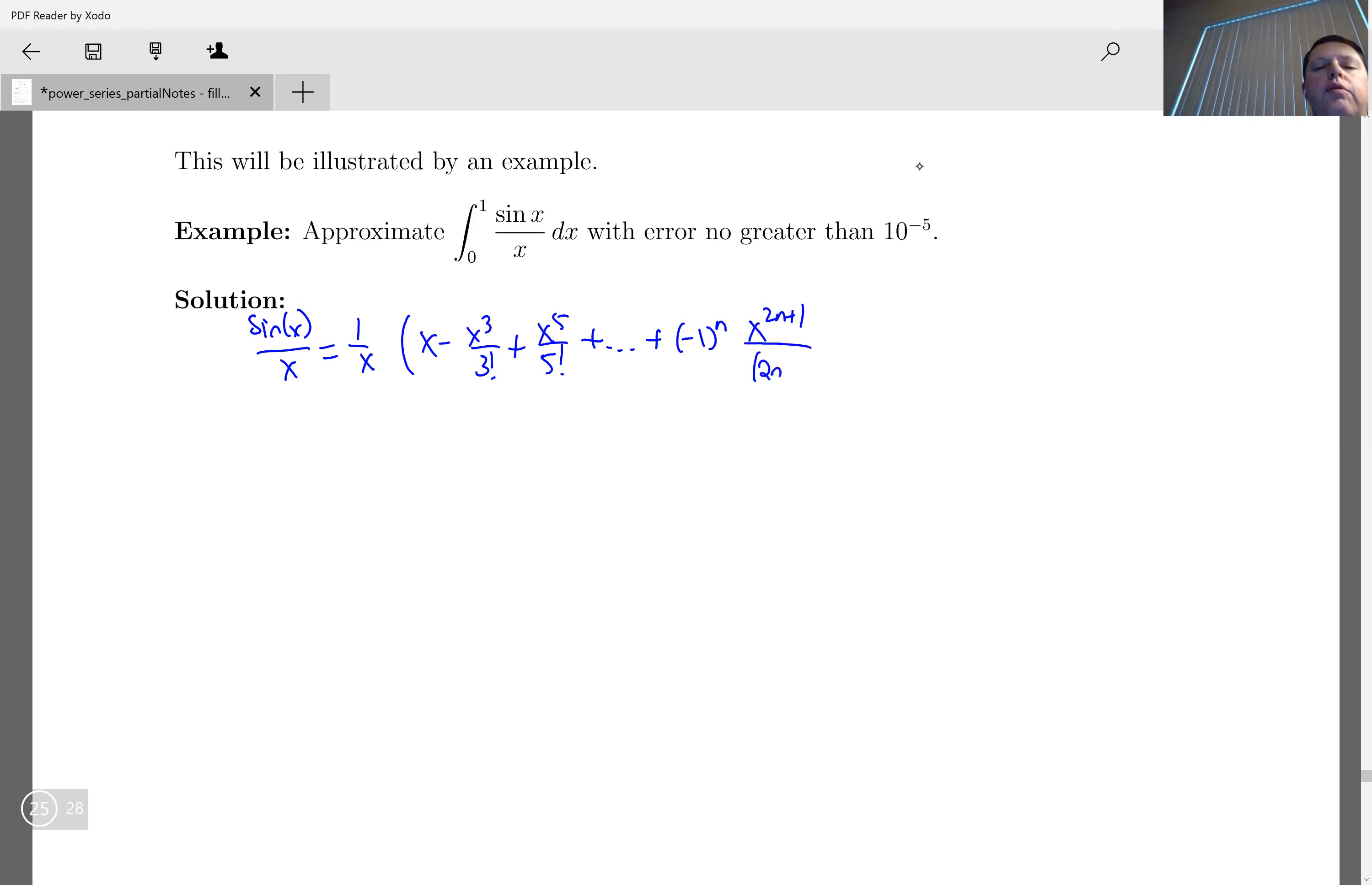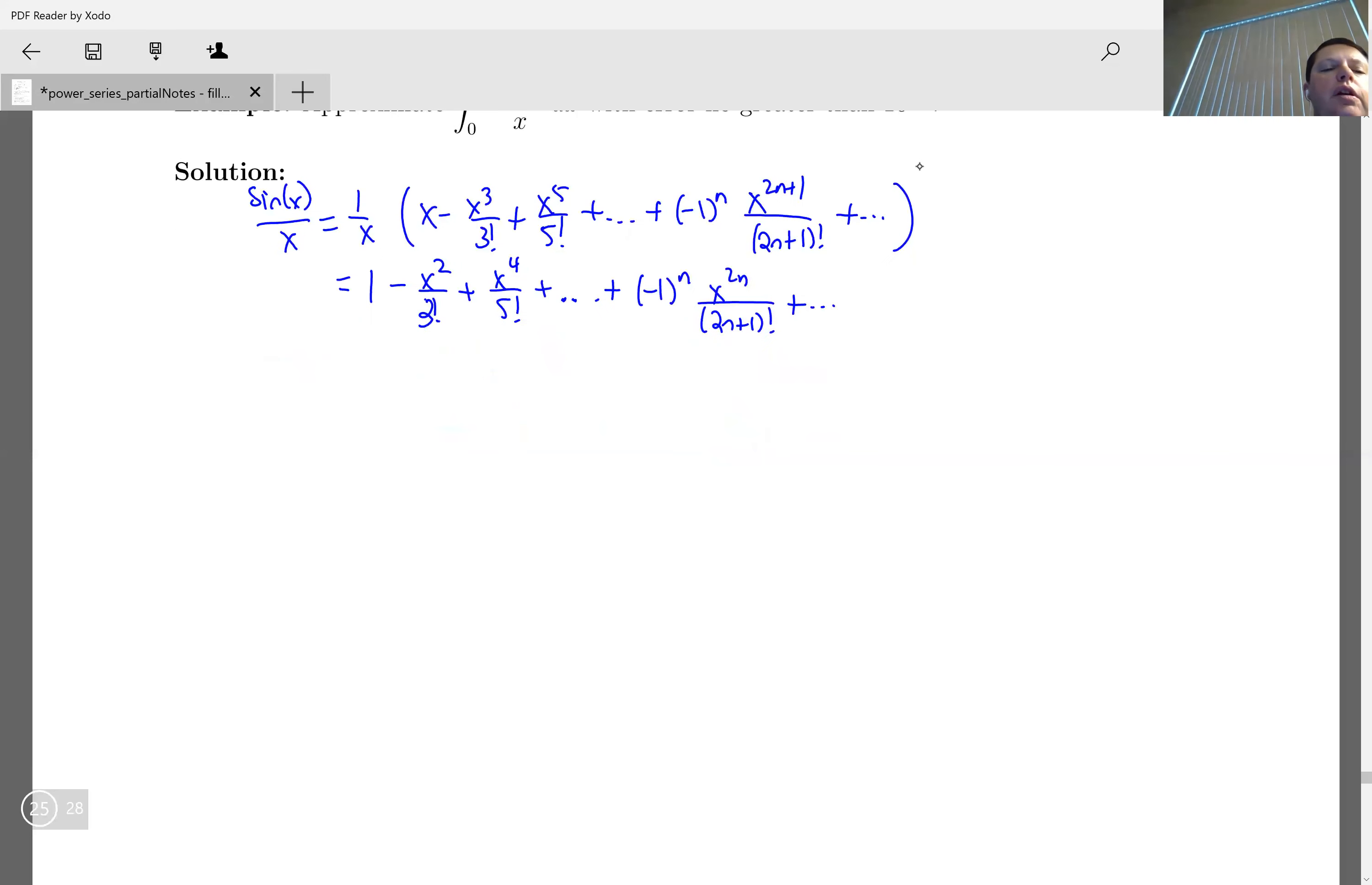And so we know that this is going to be 1 minus x squared over 3 factorial plus x to the fourth over 5 factorial plus negative 1 to the n x to the 2n over 2n plus 1 factorial, etc. So the integral from 0 to 1, if I were going to use the Taylor series to compute the integral completely, I'm just going to integrate.